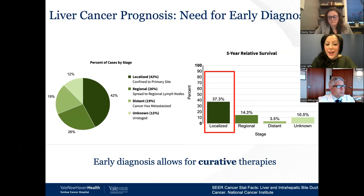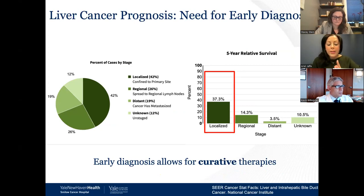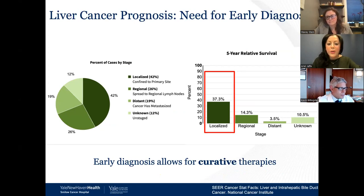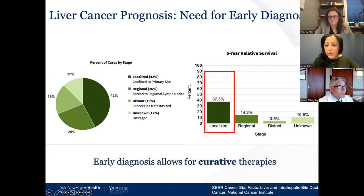One reason we're not making headway is that we remain very poor at diagnosing this cancer early. From the SEER database, less than 50% of cases are diagnosed before the disease has spread outside the liver. The earlier the diagnosis, the more likely a patient is to have prolonged survival. The challenge is that we are not screening patients appropriately, and with liver cancer, most patients are asymptomatic even with huge liver lesions until it's extremely advanced.